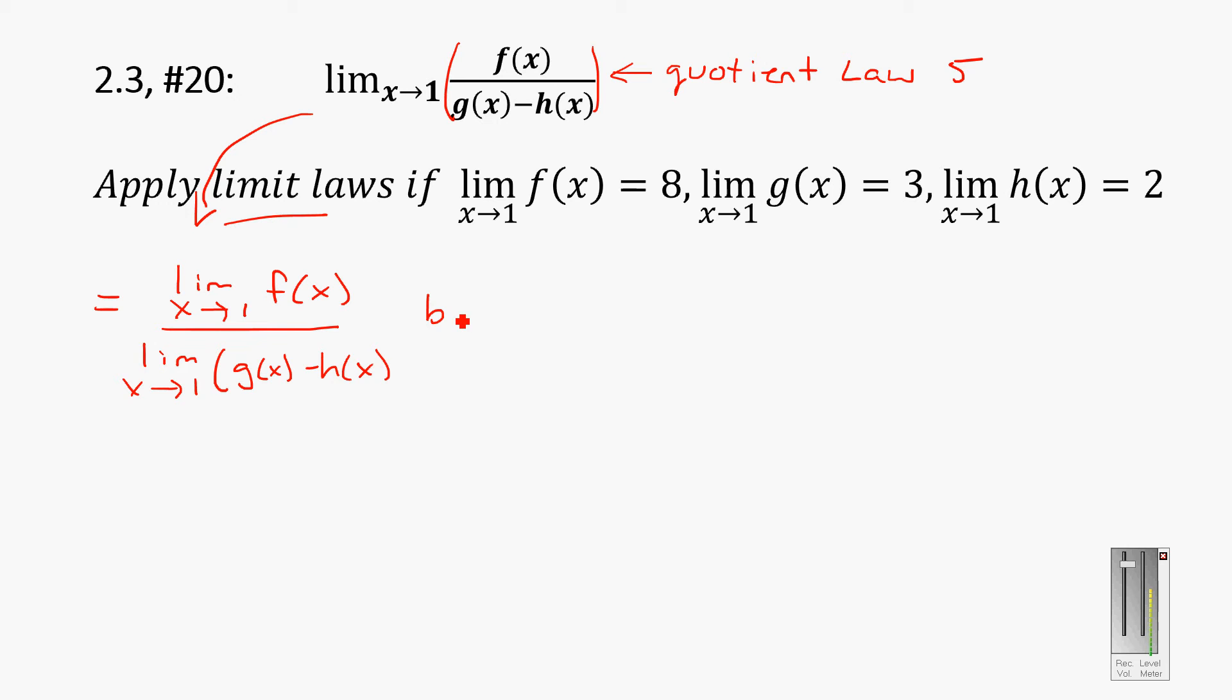And so that was by law 5 is what allowed us to do that. So we now have basically the limit over the limit. So law 5 allows us to put that on the top and the bottom. Now law 2 actually allows us to distribute this in. This is the difference law.